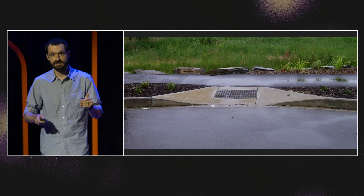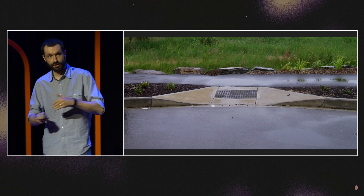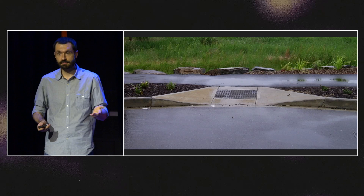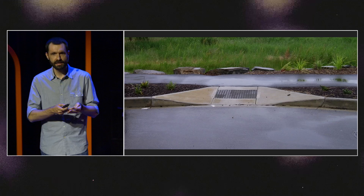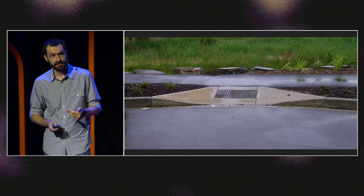This is often referred to as the curb cut effect. Curb cuts — those little divots in the sidewalk — are there for wheelchair users to mount from the road onto the sidewalk. But they're used for way more purposes than that: people with baby carriages, delivery carts, bicycles, or scooters. There's a whole range of people that benefit from a feature designed for accessibility.